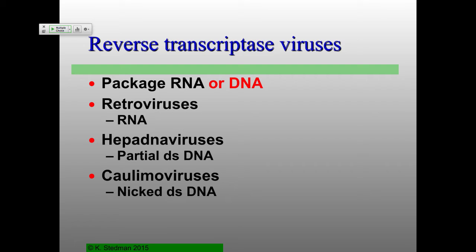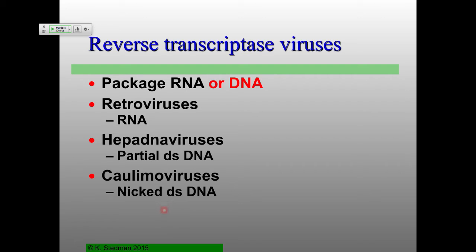There are also the caulimoviruses — these are some plant viruses. The plant virus community, getting back to taxonomy, names all their viruses based on what they infect. So 'cauli' is cauliflower and 'mo' is mosaic, which is the particular phenotype you get when cauliflower is infected by this virus. This is the exact opposite of RNA packaged in retroviruses — this is the double-stranded DNA which is packaged in the virion, but still has an obligate reverse transcription step in terms of how these are being replicated.